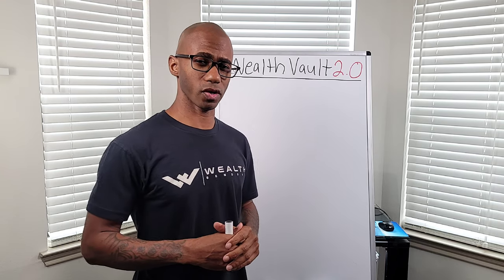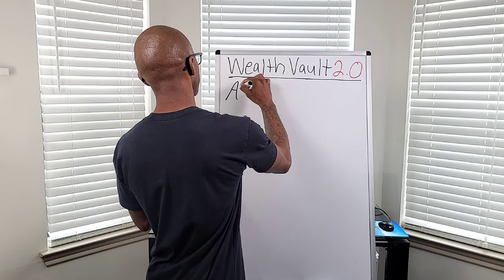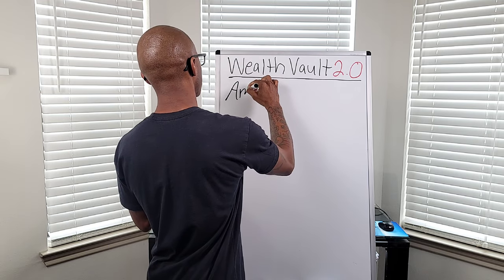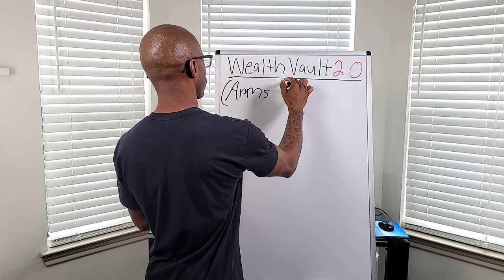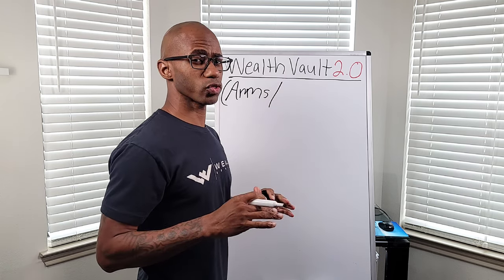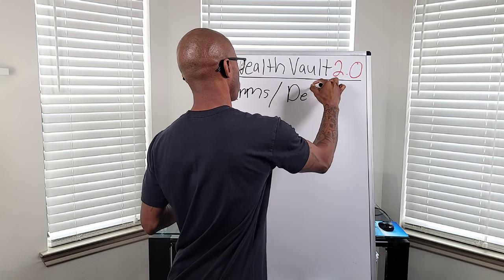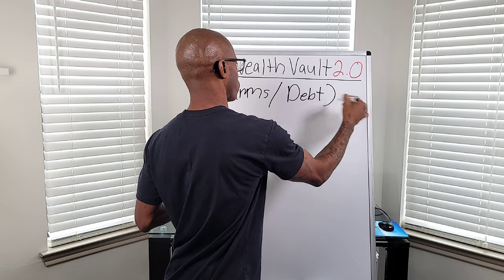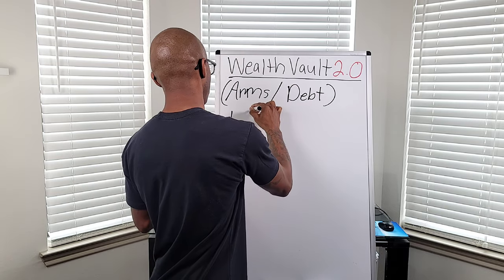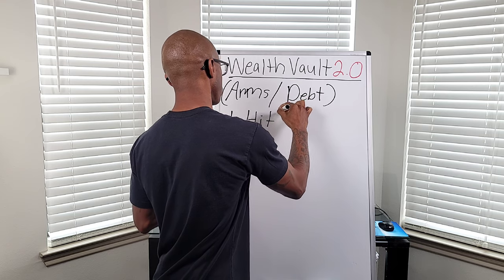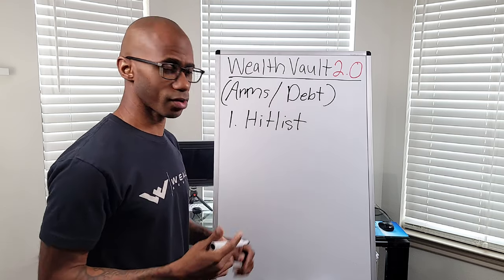WealthBowl 2.0 is your arms — your arms and hands. WealthBowl 2.0 takes care of all your debt. It consists of one account, and we like to call it the headless. We want to be strategic when we're taking out our debt.